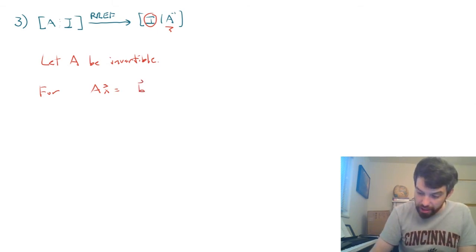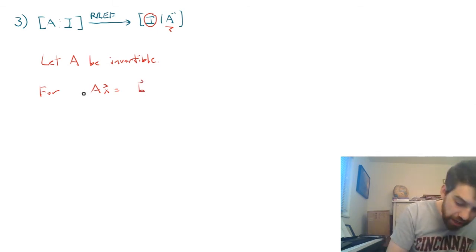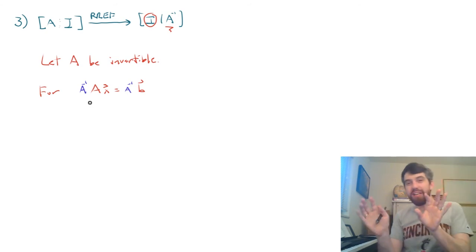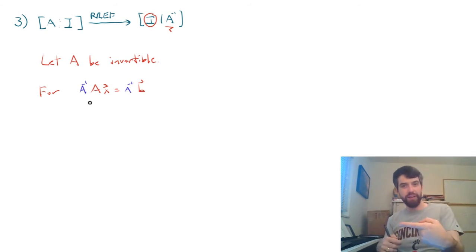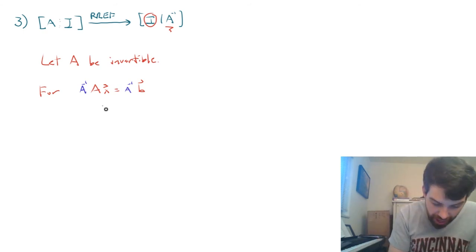Ax equal to B, then what I could do is I could multiply by A inverse on both sides. It's invertible by assumption, so I have my A inverse. The A inverse times A becomes the identity. The identity on X is just X. So this is going to become the vector X is A inverse times B, and here's the key point. This is my unique solution.